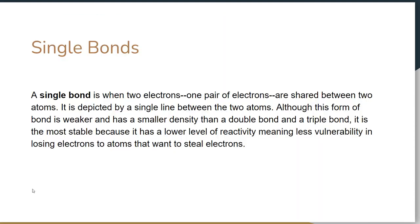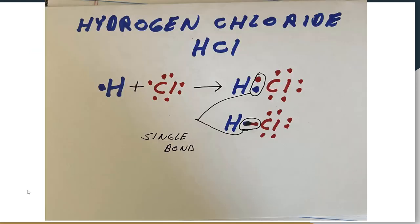A single bond is when two electrons or one pair of electrons are shared between two atoms, and this is usually shown by a single line between the two atoms. A good example of this is hydrogen chloride. Hydrogen would like to gain one more electron, chlorine would like to gain one more electron. Neither one has the ability to rip it apart from the other, so they're going to share one pair of electrons. You can see the hydrogen now has two in the outermost energy level. Chlorine is sharing one pair, so now it has eight, fulfills the octet rule. That single shared pair is shown by a single line, and that would be a single bond.